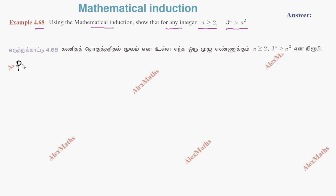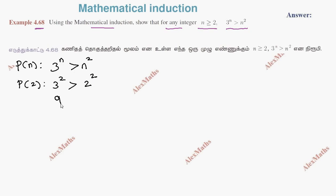P of n: 3 power n greater than n squared. For the base case, P of 2: 3 squared is greater than 2 squared. That is, 9 is greater than 4, which is true. Therefore, P of 2 is true. The first part is verified.